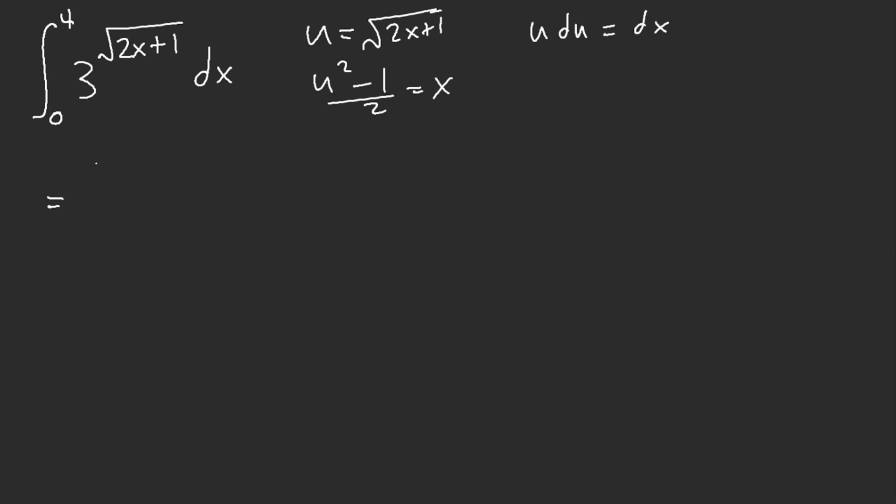So now what we have here, we'll just go ahead and change our bounds. From 0, we got 1. Plug in 4, we get 3. And so now what we have is just u times 3 to the power of u du.